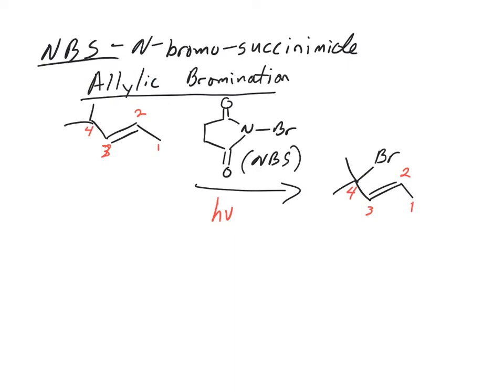That's the allylic position. Carbon-4 and carbon-1 are allylic carbons, so it would be nice to be able to do that. That's what NBS allows us to do. Like similar radical reactions, the first step is going to be an initiation.